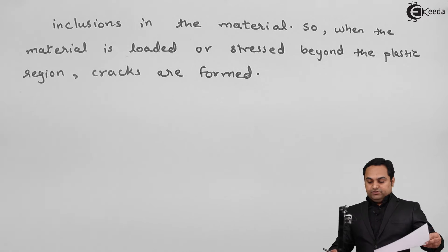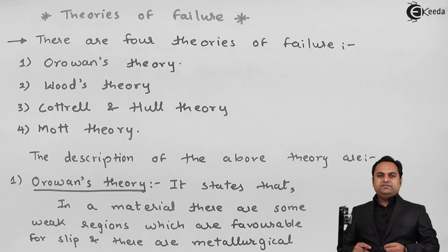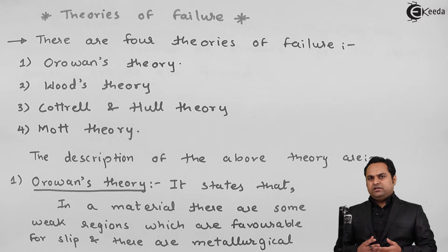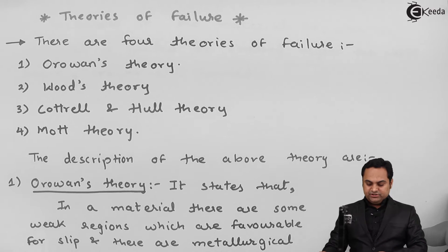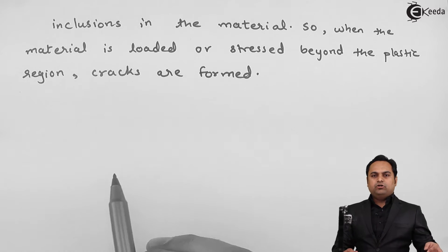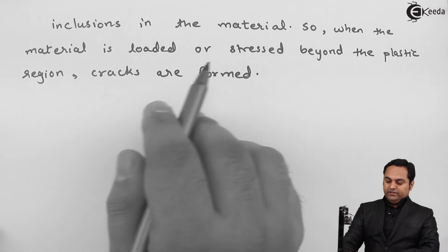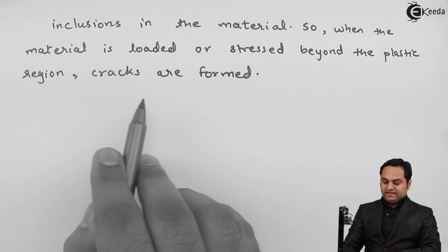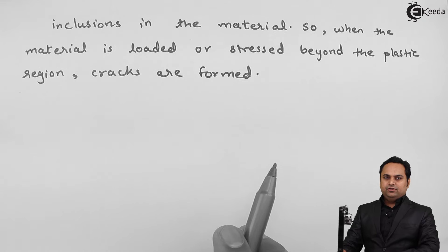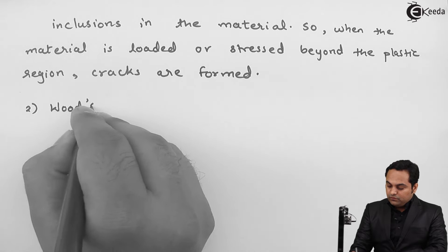So Orowan's theory states that if in a material there are some weak regions, failure will start or slipping of the layers will start from that weak region. There are also metallurgical inclusions — impurities present at the time of forming the metal — and when the material is stressed beyond the plastic region, cracks are formed and finally there will be fracture.